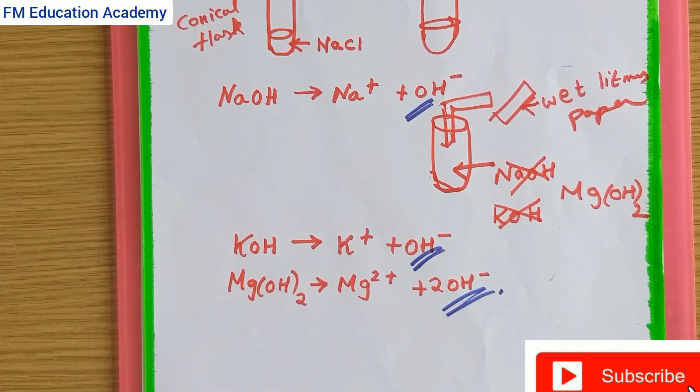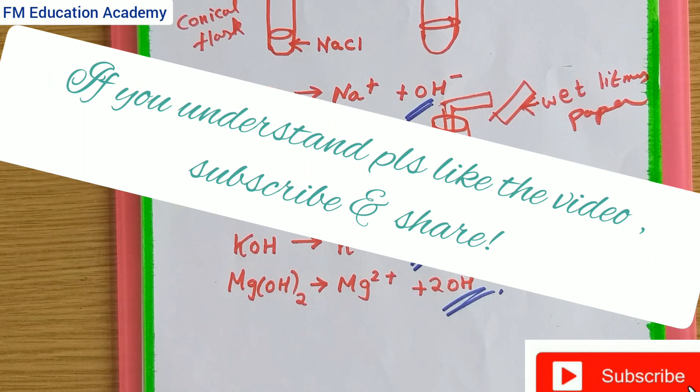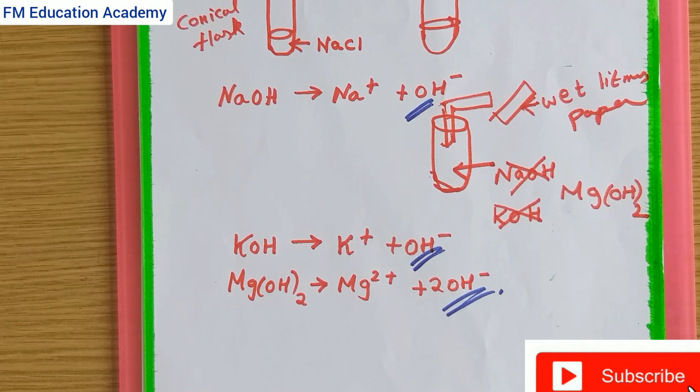What we observe is that with wet litmus paper, OH- (hydroxyl) ions are released. So we can say that bases also release hydroxyl ions in aqueous solution. Both acids and bases release ions only in aqueous solution; without water, acid or base will not give ions. Only when exposed to water do acids give H+ or H3O+ ions and bases give OH- ions.